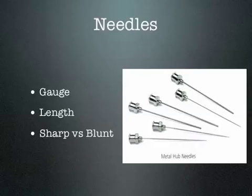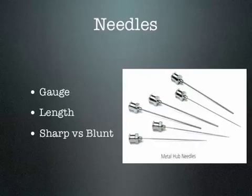Sharp versus blunt needles — a sharp needle has the advantage that it causes less tissue distortion and less pain. However, because it decreases resistance to forward advancement of the needle, if we were to accidentally pierce the globe, we would probably not know when we do that because it offers less resistance. The blunt needle causes more pain and more trauma, but it offers a lot more resistance when close to the sclera, which might prevent accidentally causing a globe perforation.